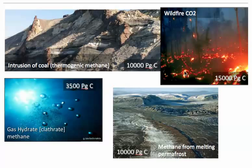Finally, the fourth mechanism is the melting of permafrost. Permafrost will deliver large amounts of methane to the atmosphere once it is melted, and this also can explain both the carbon isotope excursion as well as the warming during the Paleocene-Eocene Thermal Maximum.